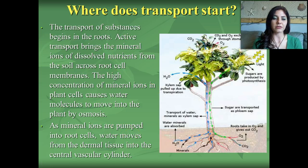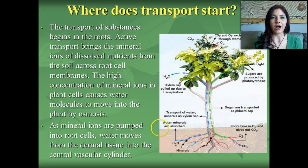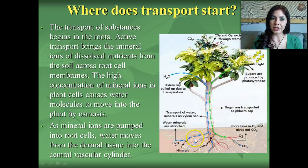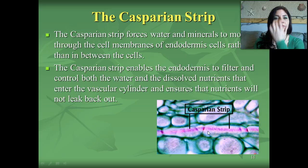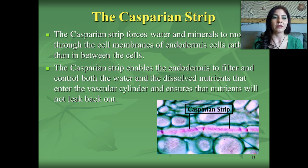As mineral ions are pumped into root cells, water moves from the dermal tissue into the central vascular system. Osmosis is a type of passive diffusion — moving from a high concentration of water outside the plant. When the plant uses active transport to bring minerals and ions in, the roots become more concentrated than the outside environment, so water begins to flow in. The Casparian strip forces water and minerals to move through the cell membranes of the endodermis cells rather than between the cells, enabling the endodermis to filter and control both water and dissolved nutrients that enter the vascular cylinder, ensuring nutrients will not leak back out.